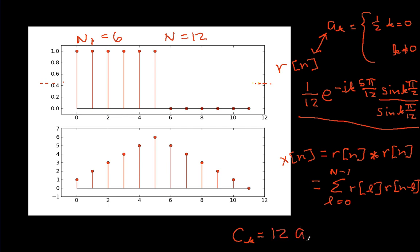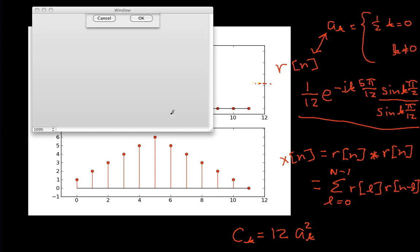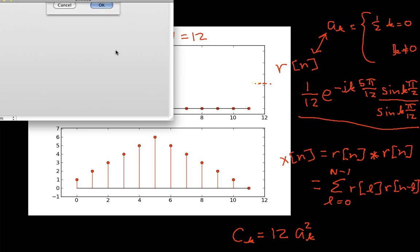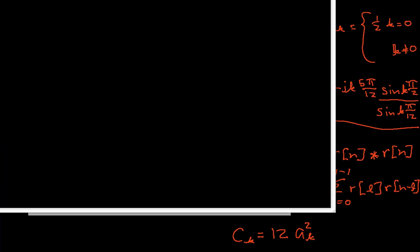these will be N, which is 12, times a sub k times itself, so it's a sub k squared. Let's bring up an empty window and work out what these c sub k's will be then.